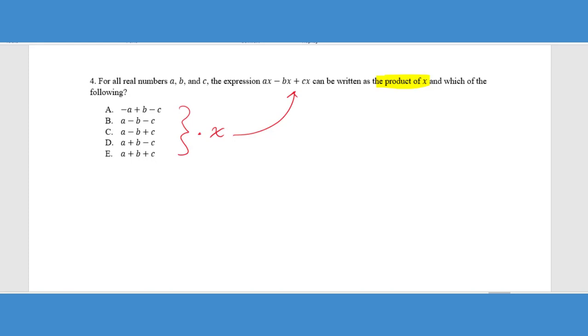So what we're going to do here is if I took the X out, if I took this X and I removed it from this expression, what would be leftover would be an A, a negative B, and a positive C. So if I redistributed that, I'd have AX minus BX plus CX, which is our original term. So you can always double check yourself. So we're looking for that answer choice.